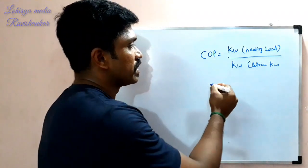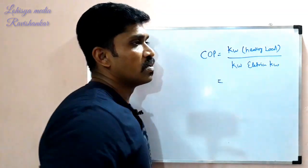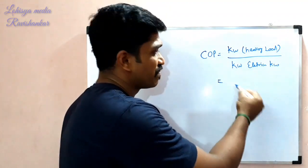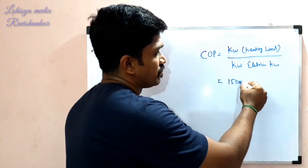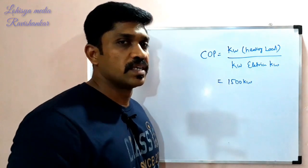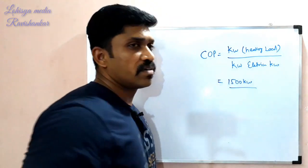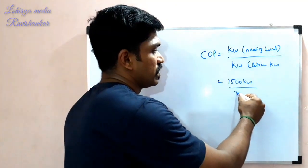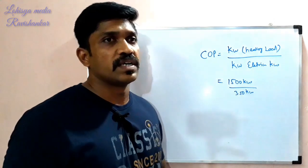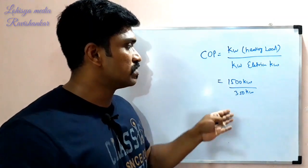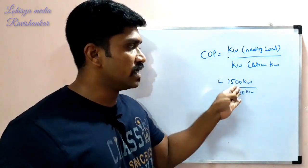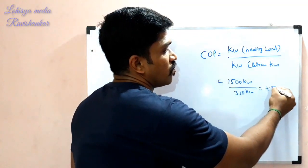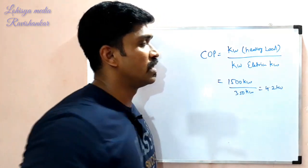Let's say a COP example. The heating load — the chiller capacity — suppose 1500 kilowatt heating load. Now the power input is 350 kilowatt. Now, the COP is 4.2 — kilowatt heating load divided by kilowatt power input.